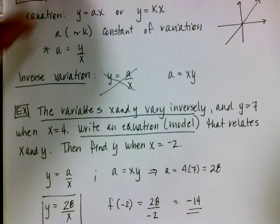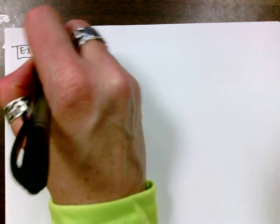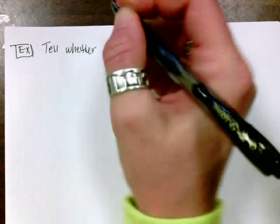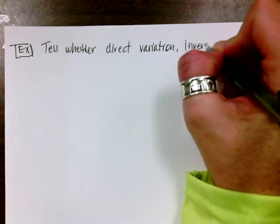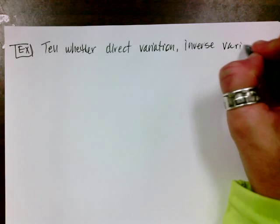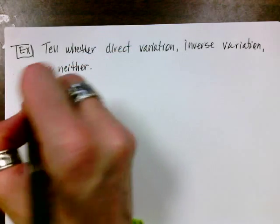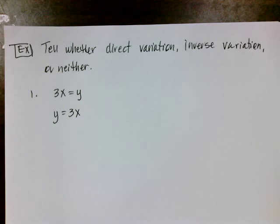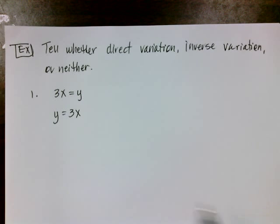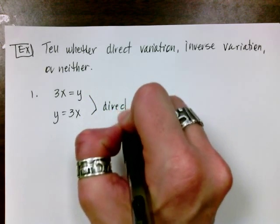Okay, we have quite a bit of writing to do today since we're starting a new chapter, and we always have a lot of definitions when we start a new chapter. So our next example is going to say tell whether direct variation, inverse variation, or neither. So number one, you're going to have the equation 3x equals y. So I'm going to rearrange it, and I'm going to write it as y equals 3x, because when an equation looks like what we're used to seeing, we typically know what to do. Because y and x are on the same line, this is my constant of variation, this is then direct variation.